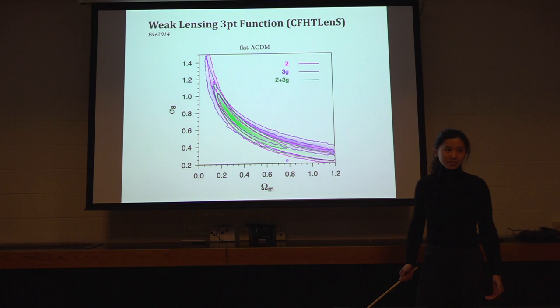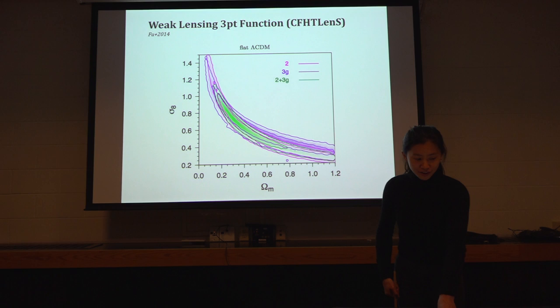They did not do neutrino mass, but people should do it in the future. Four-point has not been done, and we did not model them, because three-point is already so difficult.